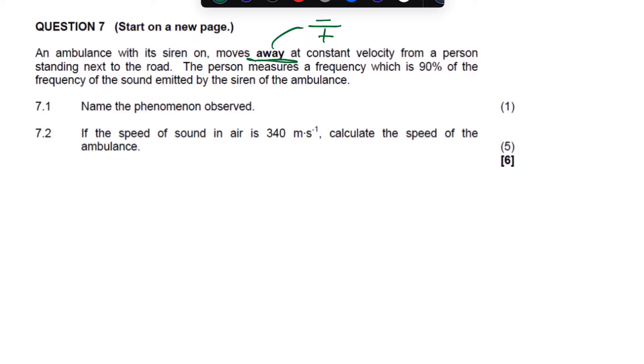Now, the person standing next to the road, that means the velocity of the listener is zero. Now, the person measures the frequency, which is 90% of the frequency of the sound emitted by the siren of an ambulance. This makes sense, because the person is moving away. So, if the person moves away, that means the frequency of the listener should be less than the frequency of the source. So, that less is 90%. Now, this simply means that the frequency of the listener is 90% of the frequency of the source. So, that means the person perceives the frequency that is less.